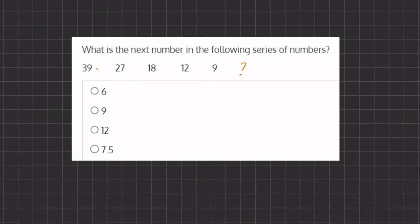All right, so let's take a look at our first transition. From 39 to 27, we are subtracting 12. From 27 to 18, we are subtracting 9.